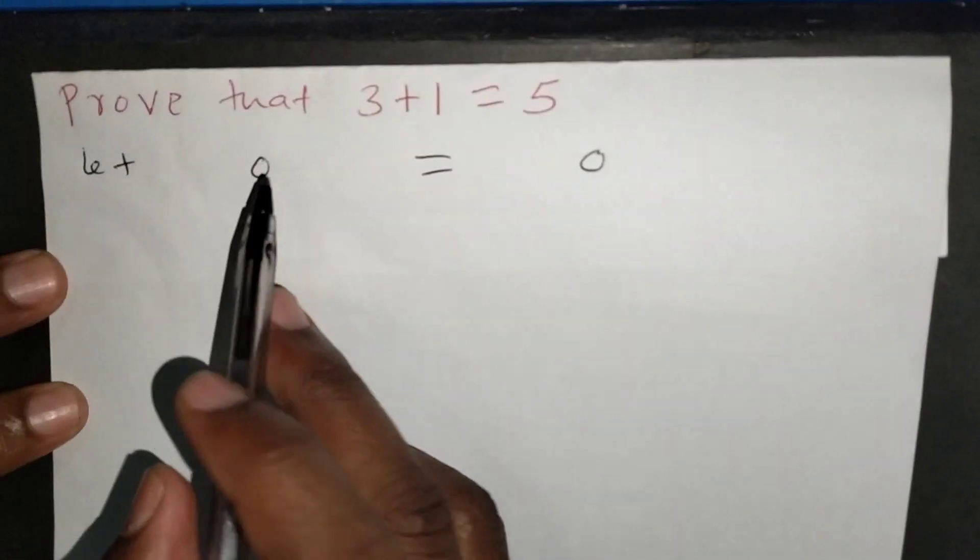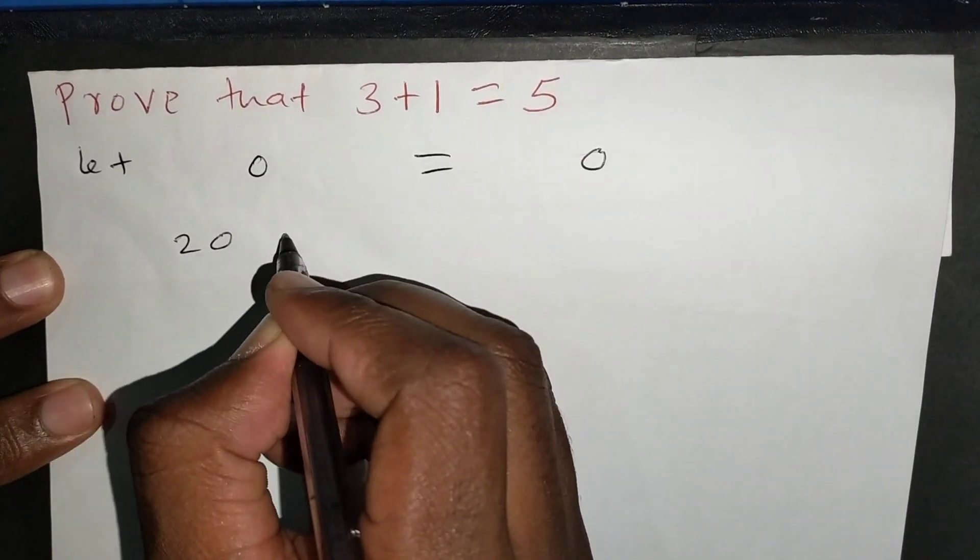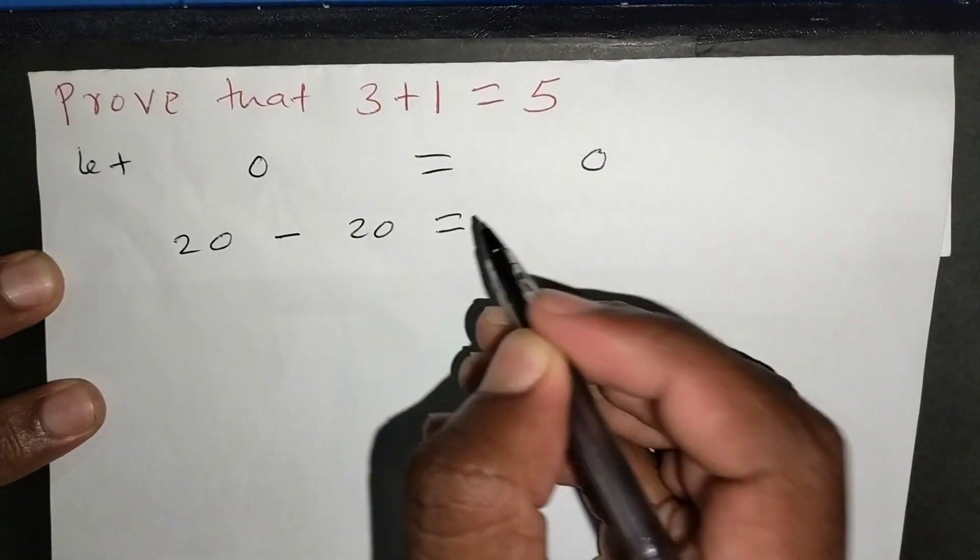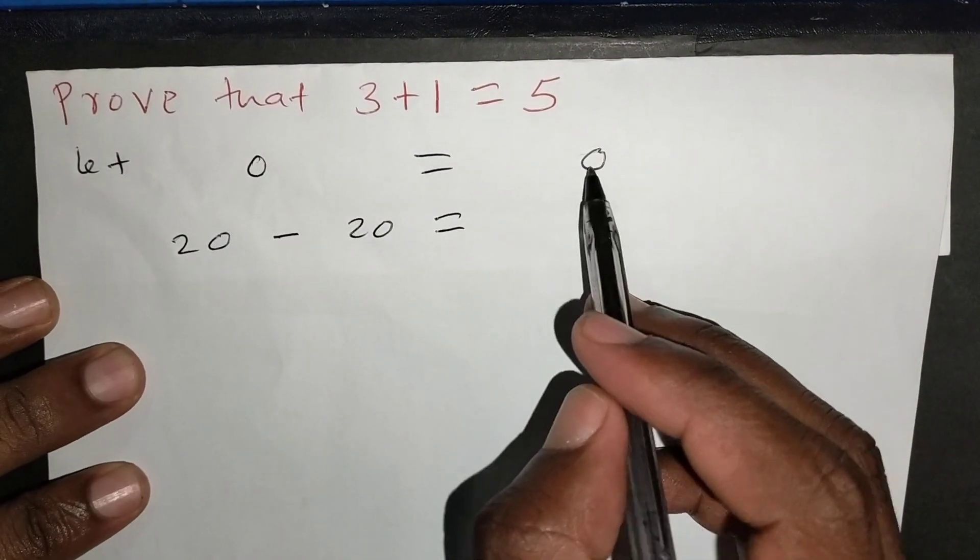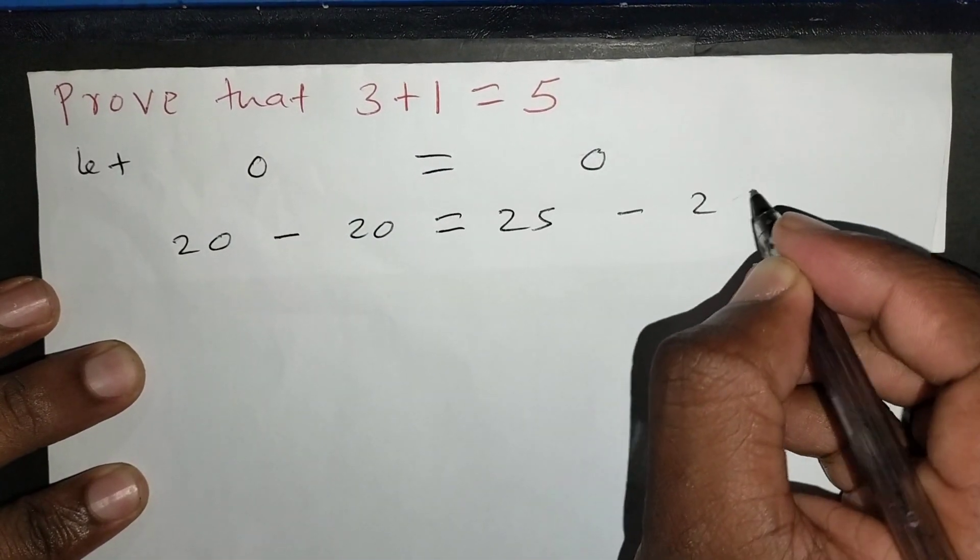Now, I want to express 0 in terms of 20, so I can simply say that 0 is the same as saying 20 minus 20. Remember 20 minus 20 will just give you 0. Then on the right hand side, I also want to express this 0 in terms of 25. So 0 is the same as saying 25 minus 25.